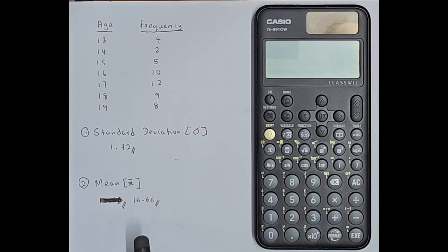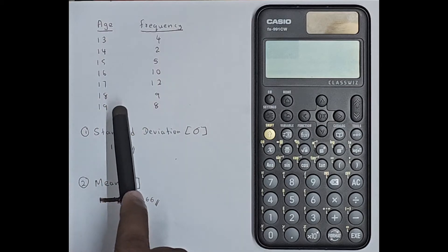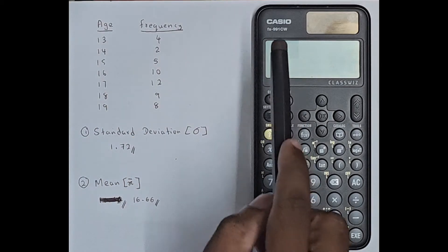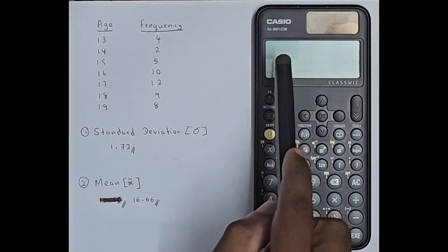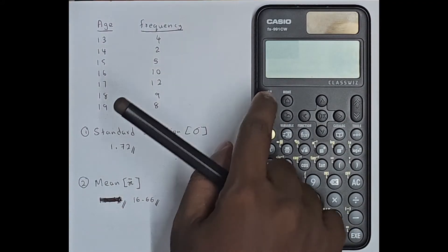Now let me show you how to calculate the standard deviation and the mean value for a frequency table using the Casio FX991CW ClassWiz calculator. First you have to turn on the calculator.